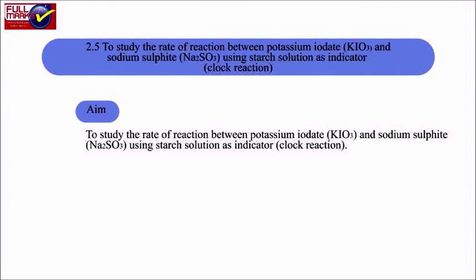Experiment 2.5: To study the rate of reaction between potassium iodate (KIO3) and sodium sulphite (Na2SO3) using starch solution as indicator. This is known as the clock reaction. Aim: To study the rate of reaction between potassium iodate (KIO3) and sodium sulphite (Na2SO3) using starch solution as indicator.